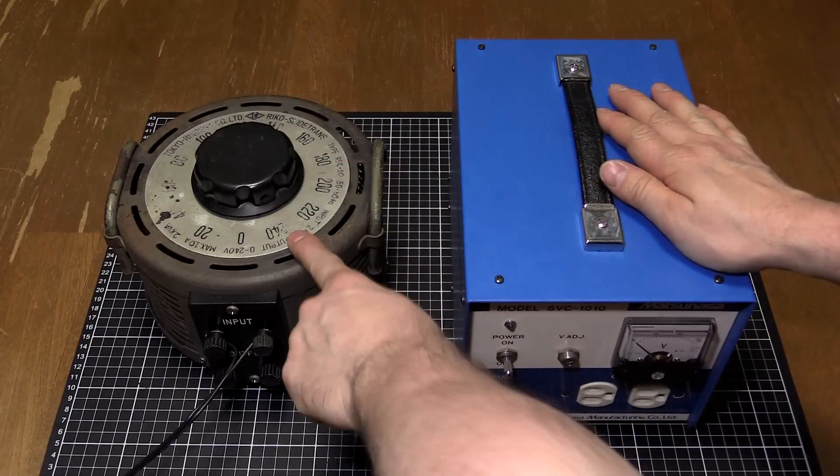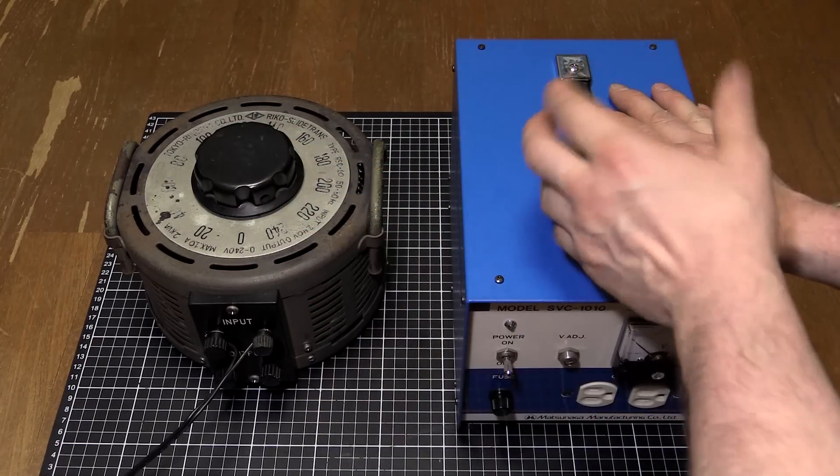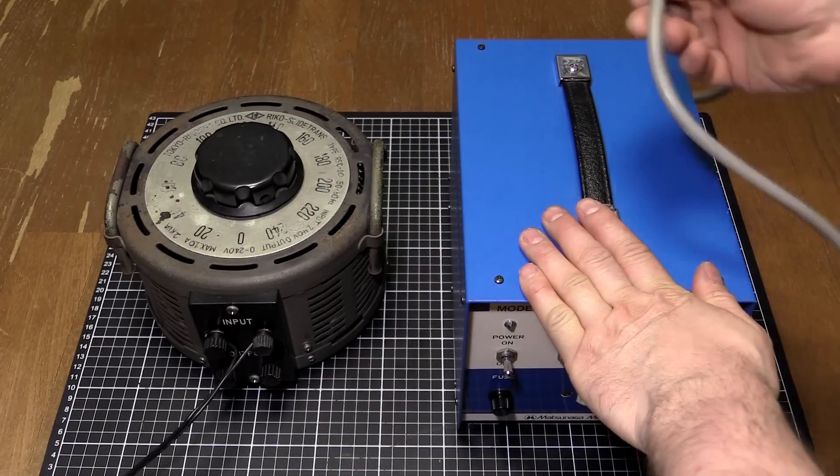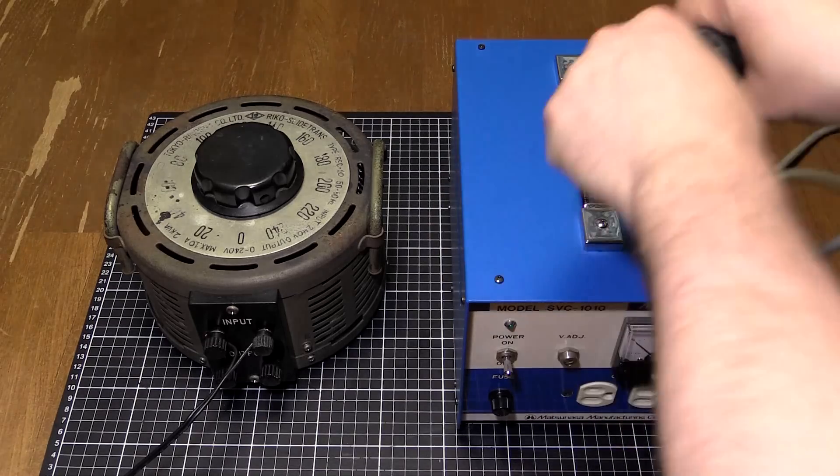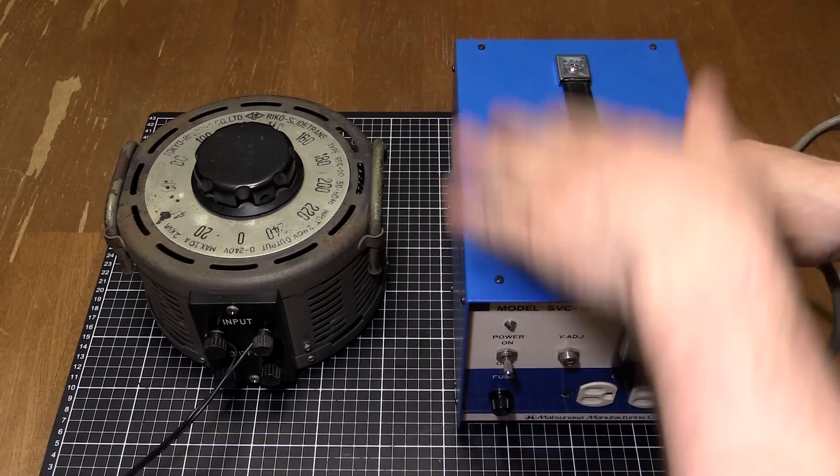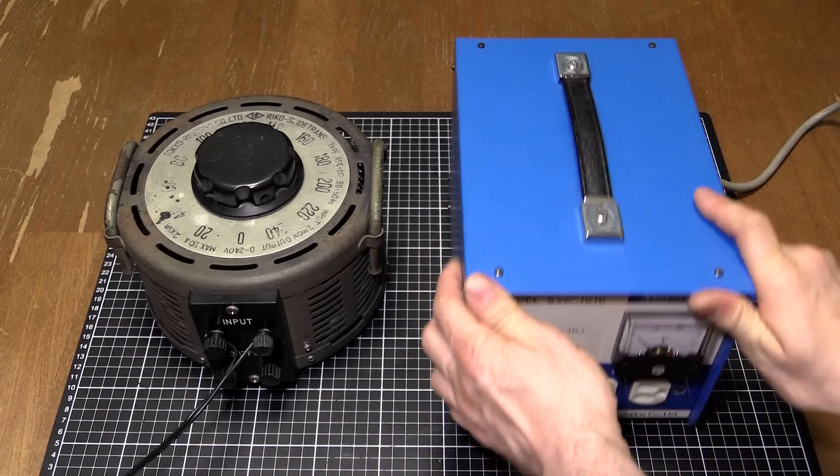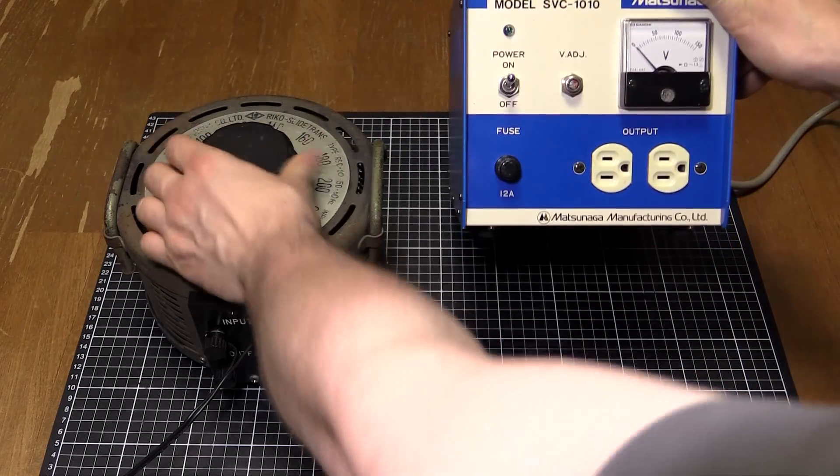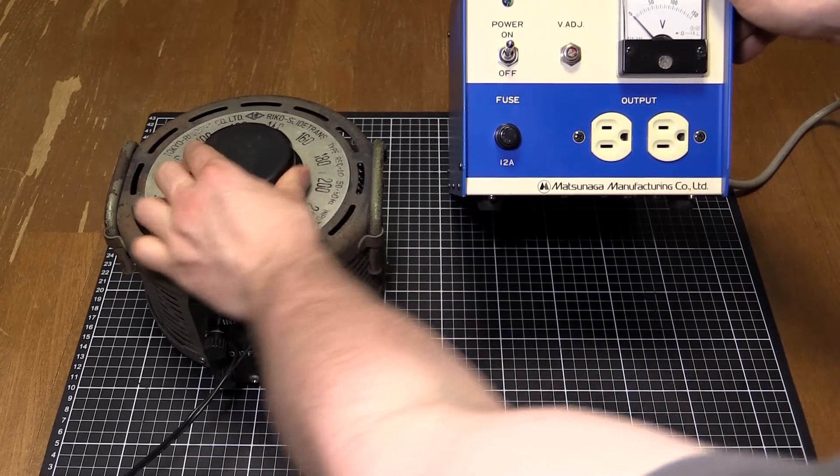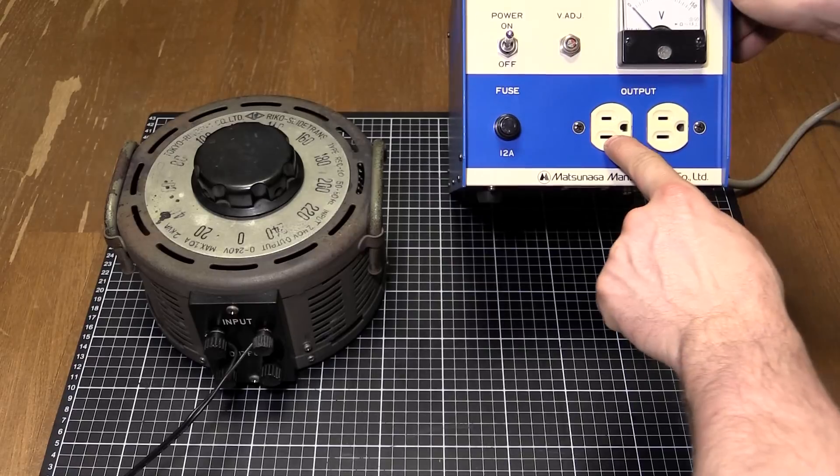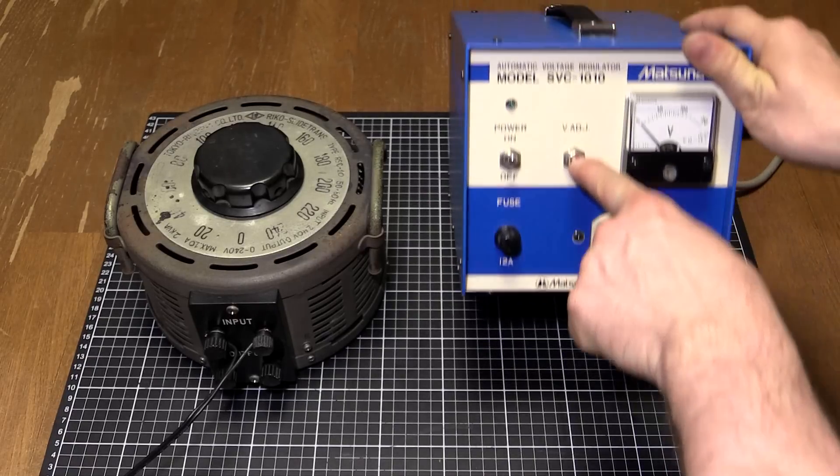Turns out it's got a variac in there that's servo or motor controlled. So what happens is when you plug the mains in, and if the mains is coming up and down, the voltage is not constant, this thing will automatically turn the variac up and down with a motor to keep the output at a set voltage, which you can adjust here.